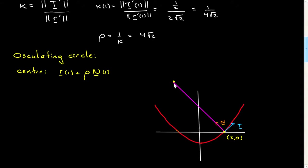and I move in the direction of the normal, and I move a distance rho, or here, rho is equal to 4 square root of 2.